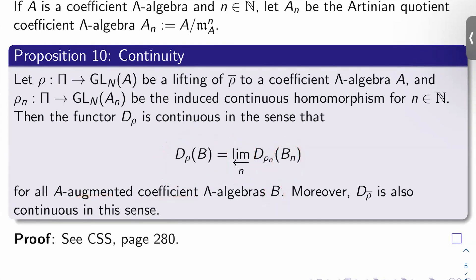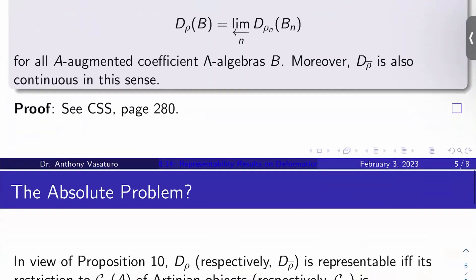Moreover, D sub rho bar is also continuous in the same sense. So we have our functors kind of commuting with inverse limits as we lift further and further up the tree, right? So for a proof of this, you can see CSS page 280.